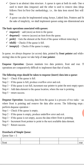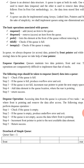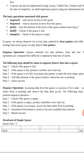In a queue, we always dequeue data pointed to by the front pointer, and while enqueuing data we use the rear pointer. Similar to how we used the top variable for push and pop on a stack, we use two pointer variables for queue operations — front and rear. The rear pointer is used to insert an element and the front pointer is used to delete an element.